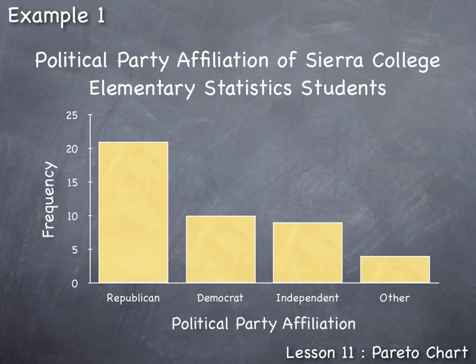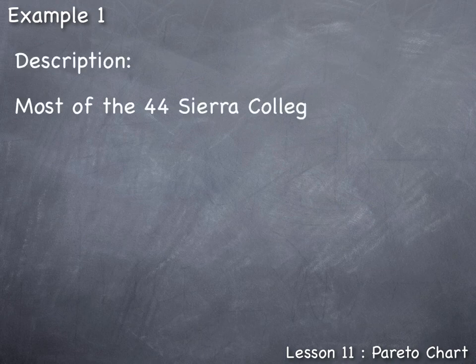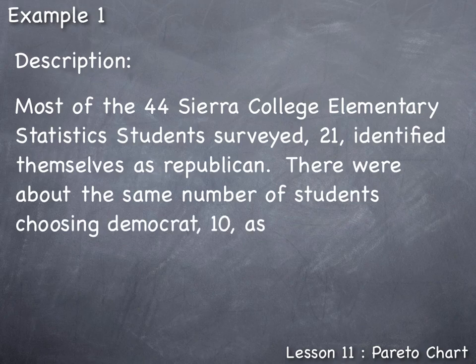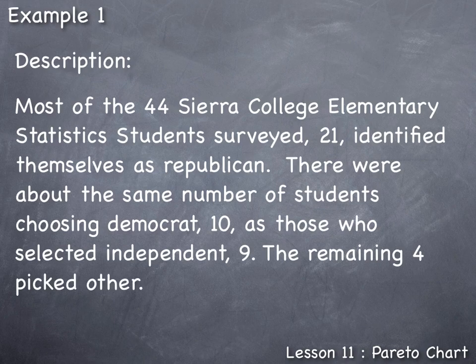With qualitative data, descriptions should only report results directly derived from the data. In this case: the most common political party affiliation was Republican, with 21 students. There were nearly equal numbers of Democrats (10) and independents (9), and the remaining 4 selected "Other." So: most of the 44 Sierra College elementary statistics students surveyed identified as Republican, with roughly equal numbers choosing Democrat and independent, and four choosing other.